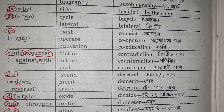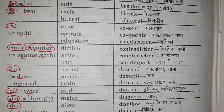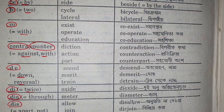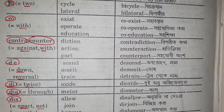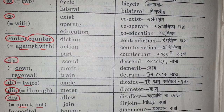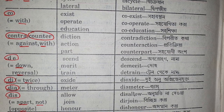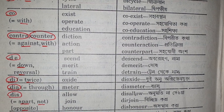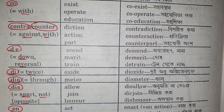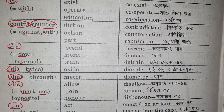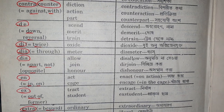Co with the meaning of with — exit, co-exist; operate, cooperate; education, co-education. Contra or counter with the meaning of against — diction, contradiction; action, counteraction; part, counterpart. D with the meaning of down or reversal — descend; married, de-married.